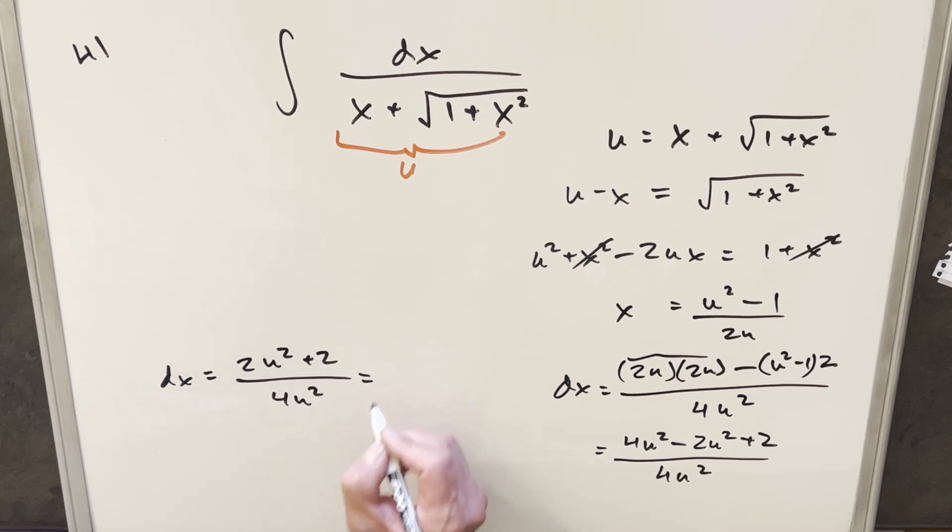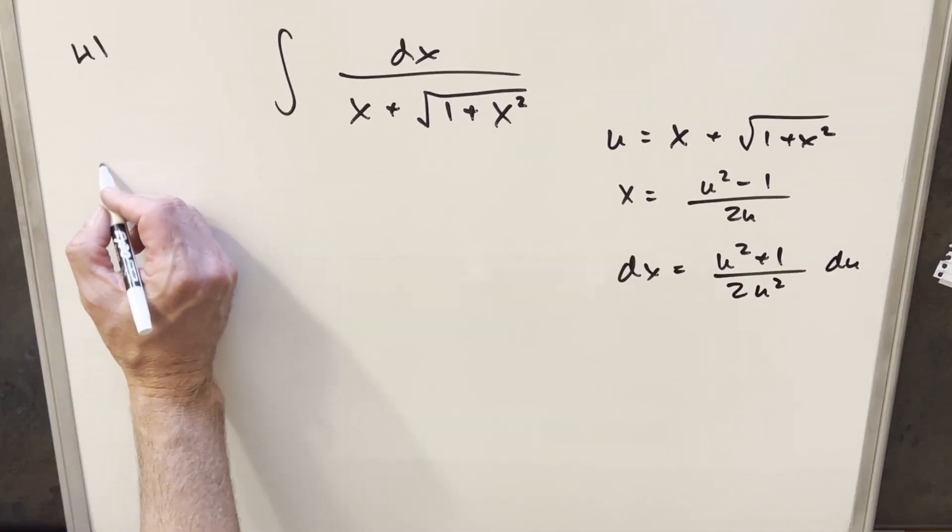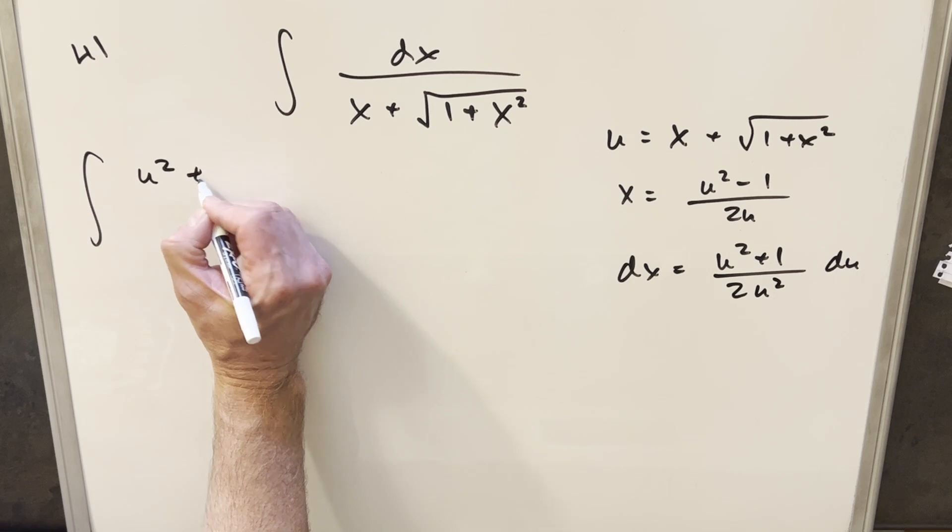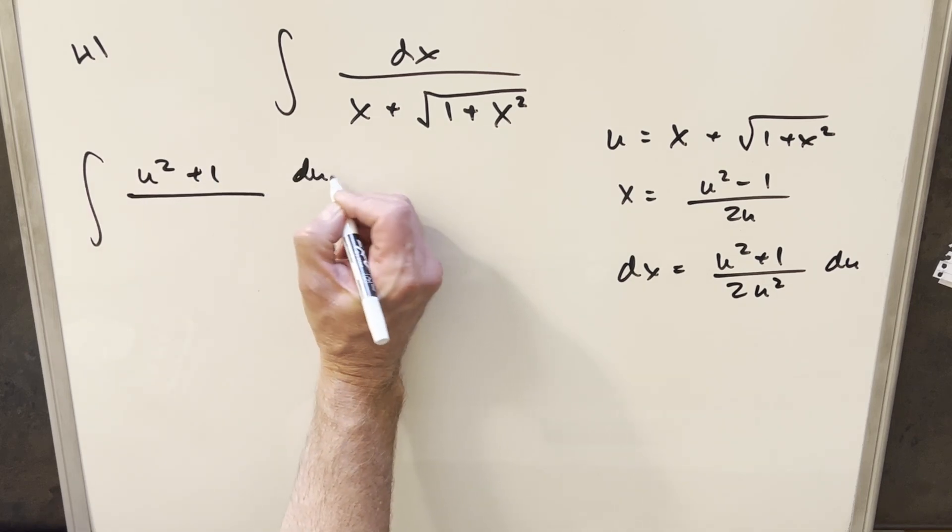Factor a 2 out of everything and cancel it out, and we're going to be left with u squared plus 1 over 2u squared. And now we can just go ahead and substitute, so our dx is going to be all this. We'll have our u squared plus 1 up here, du.